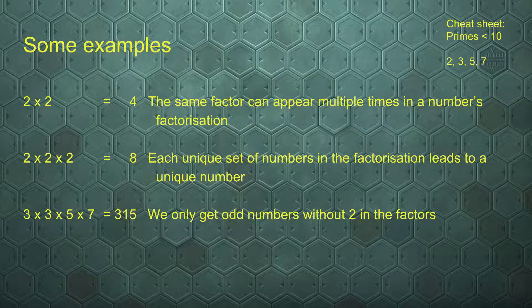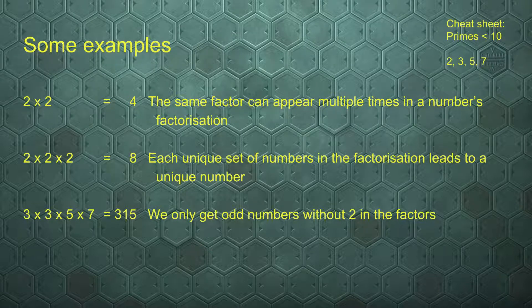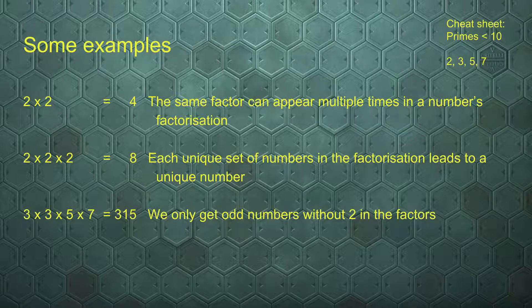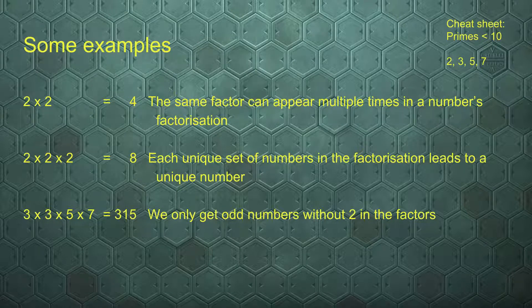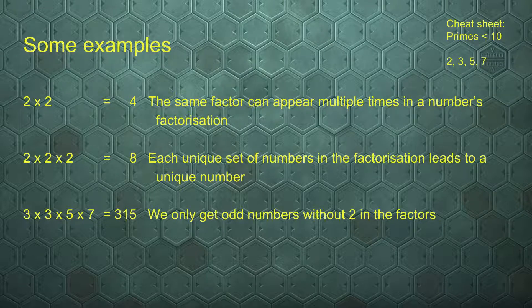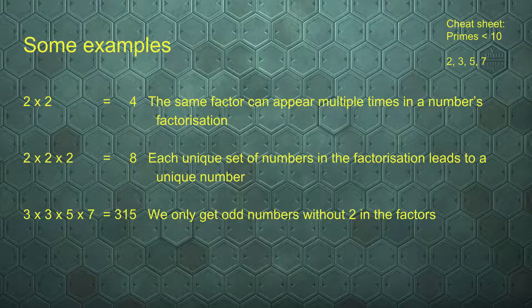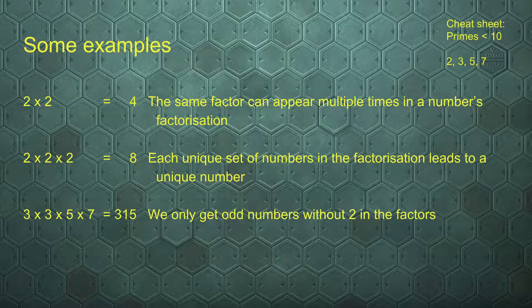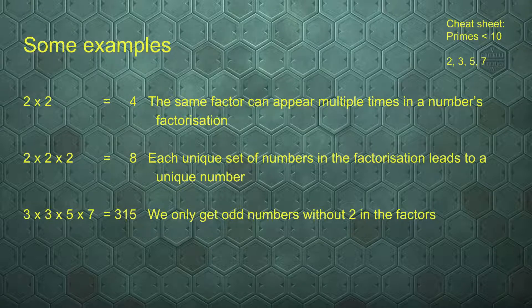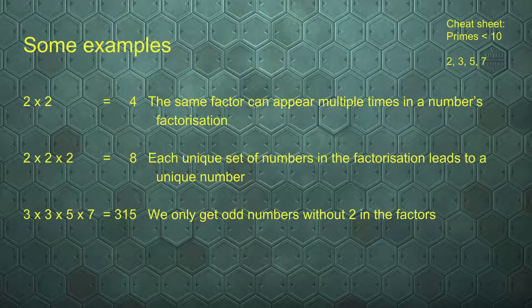In regular factors we just say 2 is a factor. For prime factorization, it matters how often a number can be put into another number. So we can have the same prime multiple times in the factorization, and 2 and 2 lead to 4. If we manipulate that list of primes, say add another 2, we get another number. Each unique set of primes in the factorization leads to a unique number. And stating the obvious, we can only get odd numbers without 2 in the factorization. If we put a 2 in there, we automatically get an even number.